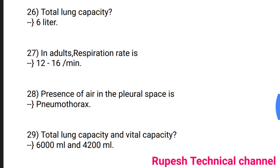Question number 26: Total lung capacity is 6 liters. Question number 27: In adults, respiration rate is 12 to 16 per minute. Question number 28: Presence of air in the pleural space is pneumothorax. Question number 29: Total lung capacity equals 6000 ml and vital capacity equals 4800 ml.